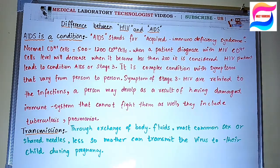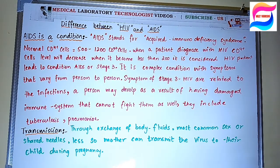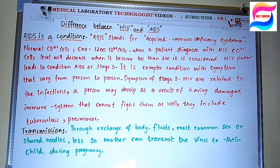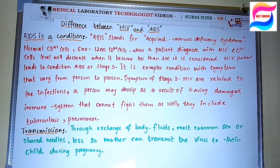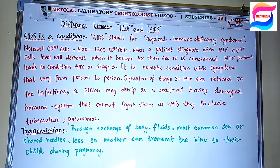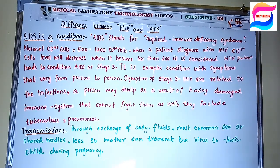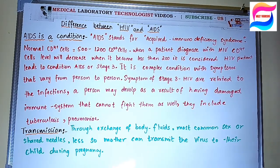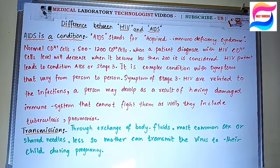AIDS is a complex condition with symptoms that vary from person to person. Patients who develop stage 3 do not necessarily show the same symptoms — different AIDS patients will show different symptoms depending on what type of infection they develop at that time. Because the immune system is near destruction, the body is not able to recover from infection. Common symptoms include tuberculosis and pneumonia.